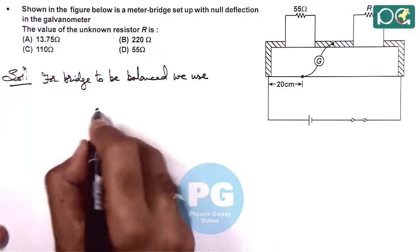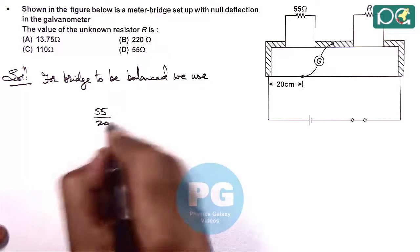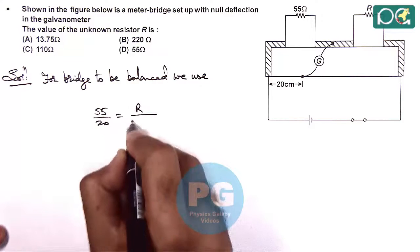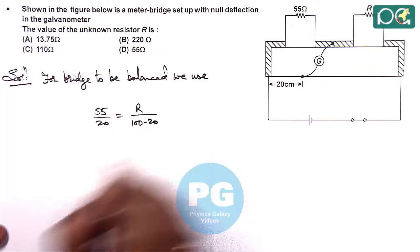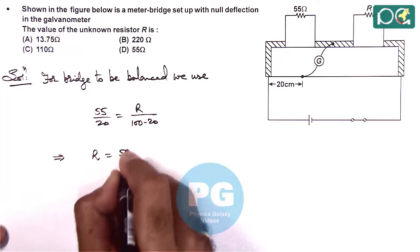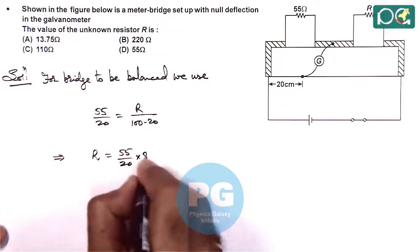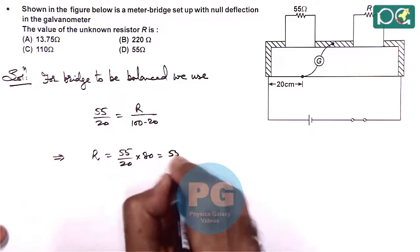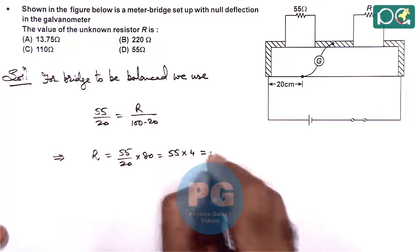So we can write 55/20 equals R/(100-20). Therefore, R equals 55/20 multiplied by 80, which gives 55 multiplied by 4 equals 220 ohms.